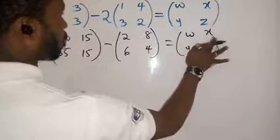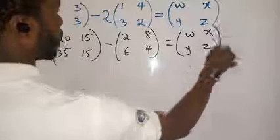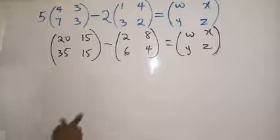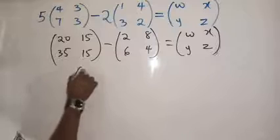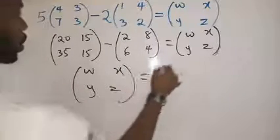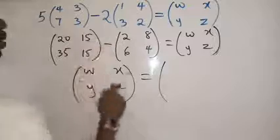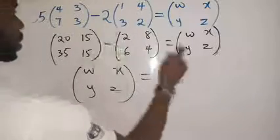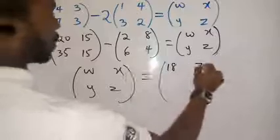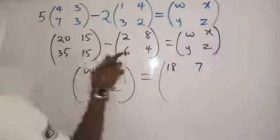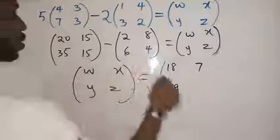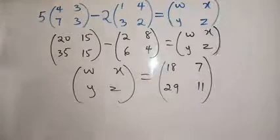So all you need to do right now is to subtract the way we solved example number 2. You subtract, the matrix WXYZ will now be equal to 20 minus 2 to give you 18, 15 minus 8 to give you 7, 35 minus 6 to give you 29, then 15 minus 4 to give you 11.